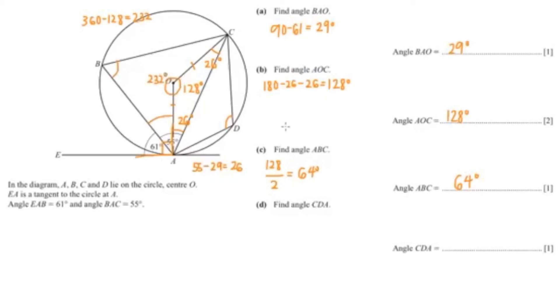So to find angle CDA, you would just do 232 divided by 2, which is 116. So our angle CDA is 116 degrees.